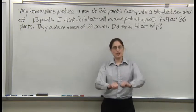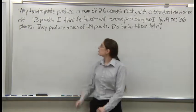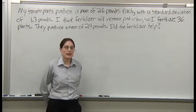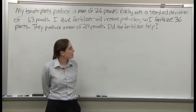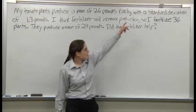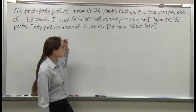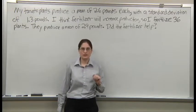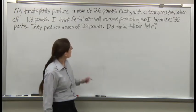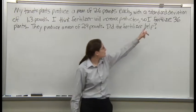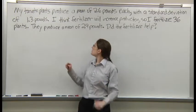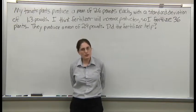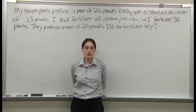Let's do some gardening. My tomato plants produce a mean of 2.6 pounds of tomatoes each every year. The standard deviation is 1.3 pounds. I think that a fertilizer will increase production, so I fertilize 36 plants. They produce a mean of 2.9 pounds. Did the fertilizer help, or was the increase just a coincidence?